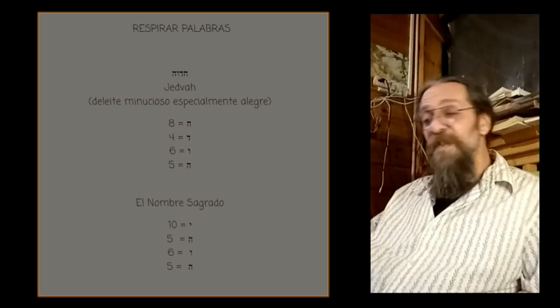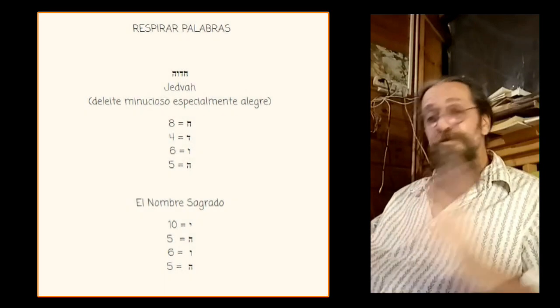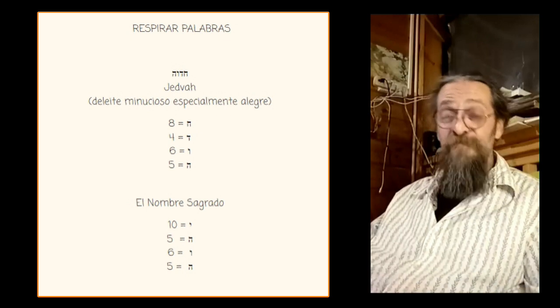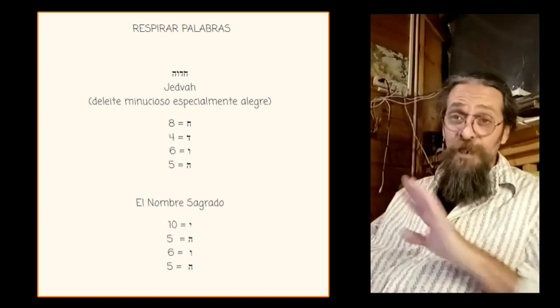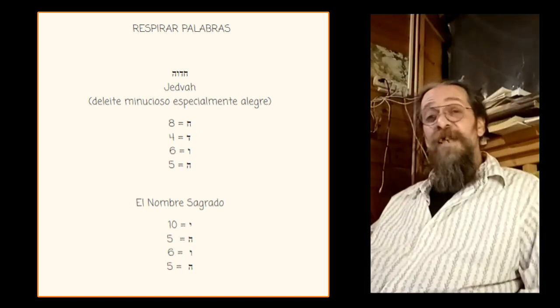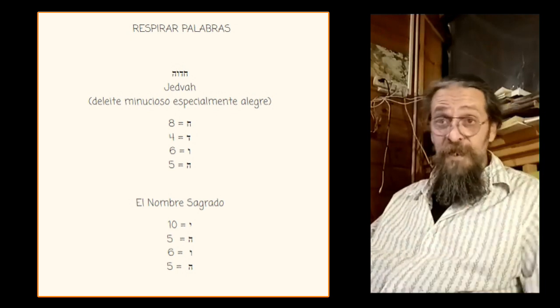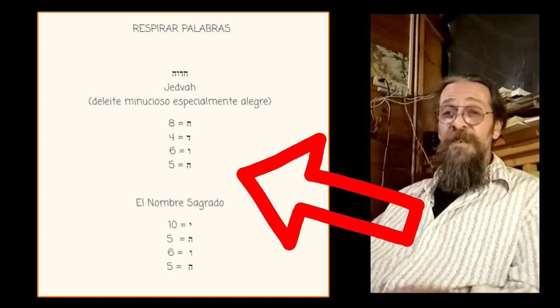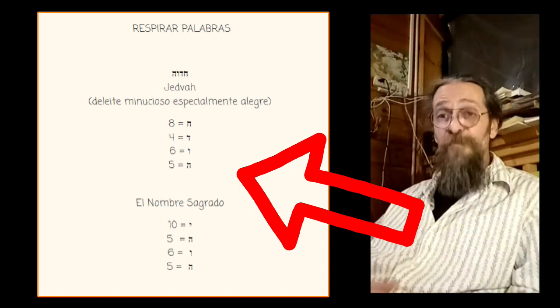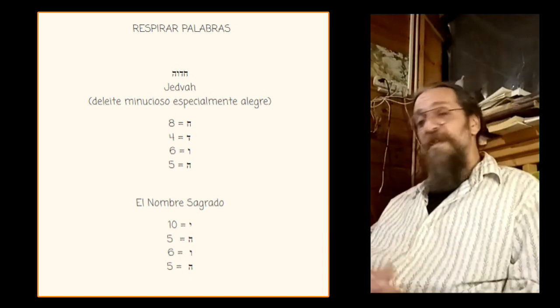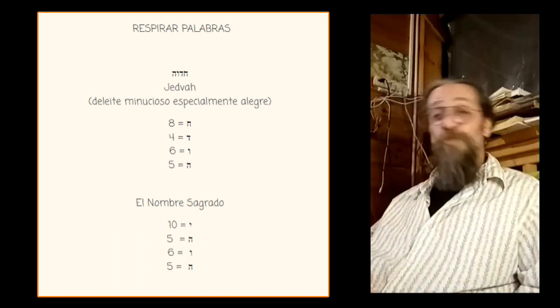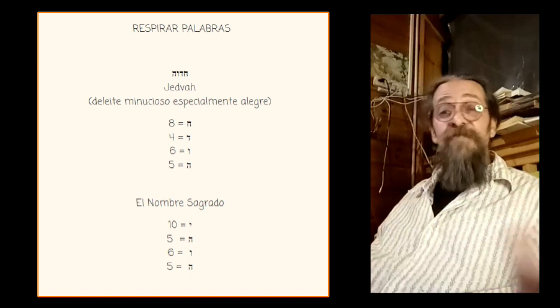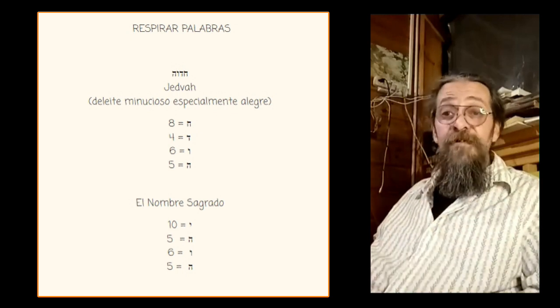Hay una palabra hebrea que no tiene una traducción literal en una sola palabra precisa a ningún idioma que yo conozca. Es la palabra Hedva. Esa palabra está en una de las dos imágenes explicadas incluso que les dejé en el Templo de Pasos en Telegram. La palabra Hedva suele traducirse por deleite, pero ocurre que deleite es la palabra Oneg, no Hedva.